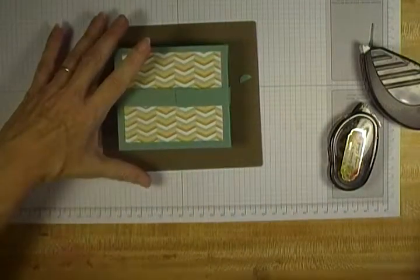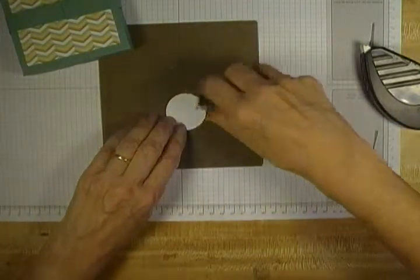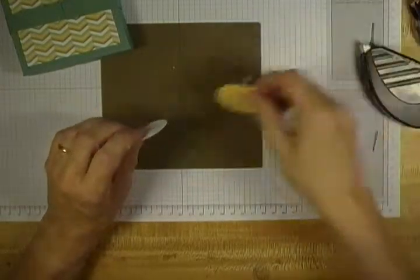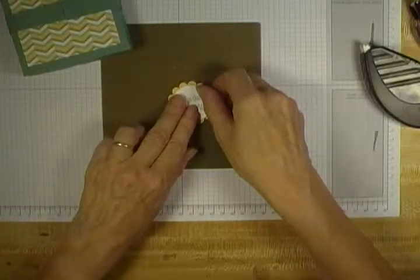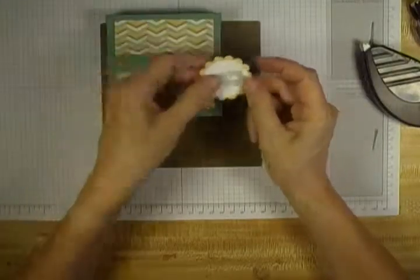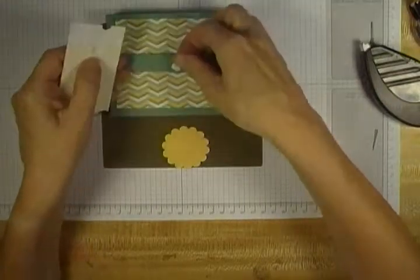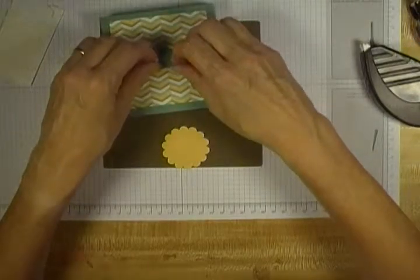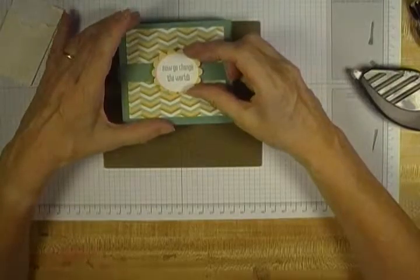Now using the new stamp set Something to Say, I've just stamped that in the Lost Lagoon on a piece of Whisper White cardstock. And I've punched it out with a one and three eighths plain circle. And then I've cut a piece of So Saffron cardstock with a one and three quarter inch scallop circle. Use a little snail to put those together, and then a couple of dimensionals either side on your belly band. Take the backing off and then center that up.